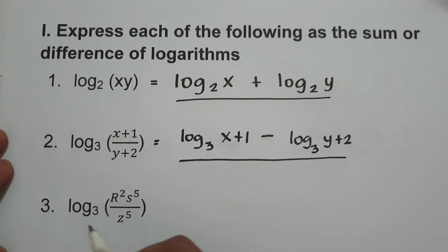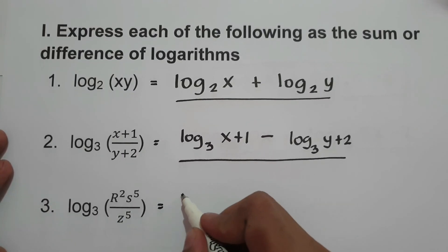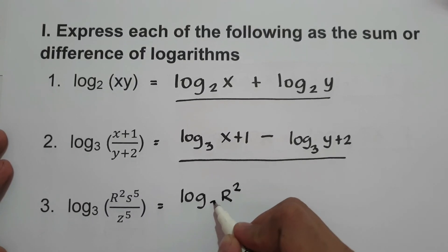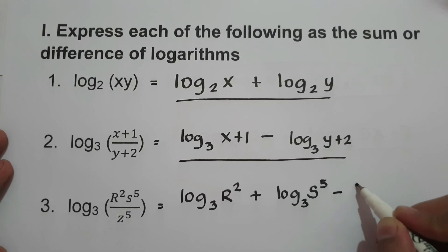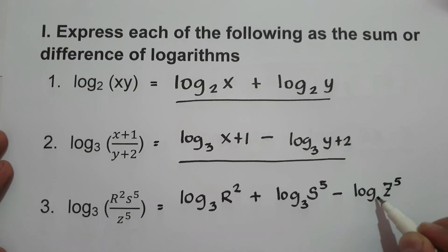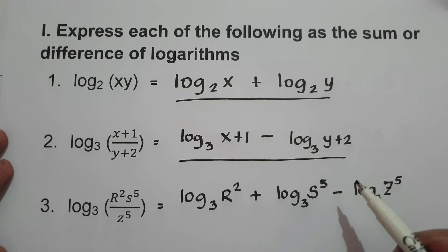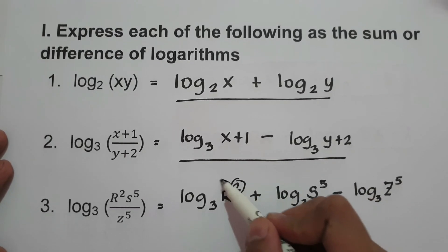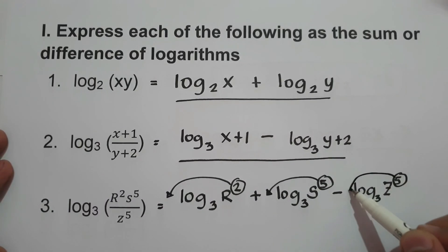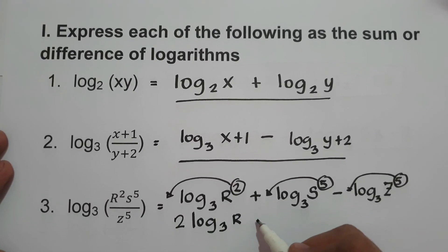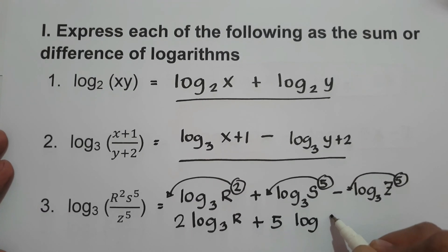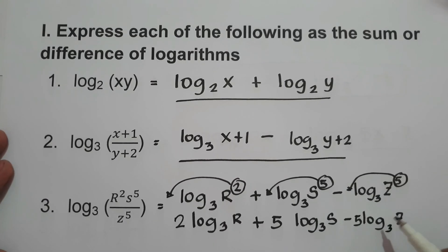What about number three? We have log base 3 of r² s⁵ over z⁵. We get log base 3 of r² plus log base 3 of s⁵ minus log base 3 of z⁵. Then we move the exponents in front to simplify: 2 log base 3 of r, plus 5 log base 3 of s, minus 5 log base 3 of z. So this will be our final answer.